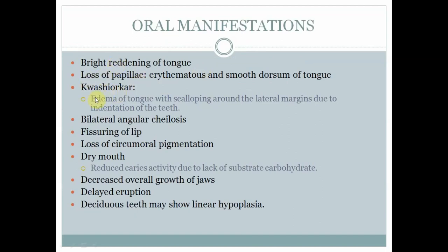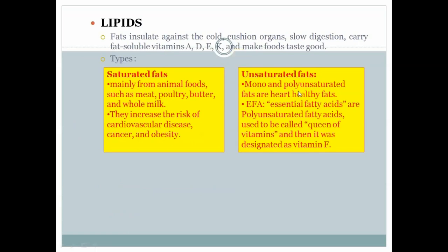Oral manifestations of protein deficiency include reddening of the tongue, loss of papillae, edema of tongue, bilateral cheilosis, fissuring of lips, loss of circumoral pigmentation and dry mouth. Most oral manifestations are similar across vitamin deficiencies with slight color and appearance variations — about 60 to 70 percent are the same. Delayed eruption of deciduous teeth and enamel linear dysplasia are also seen.